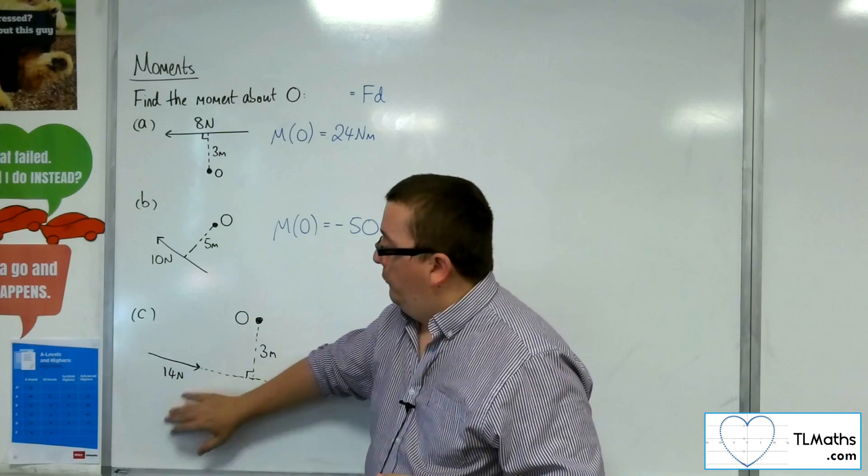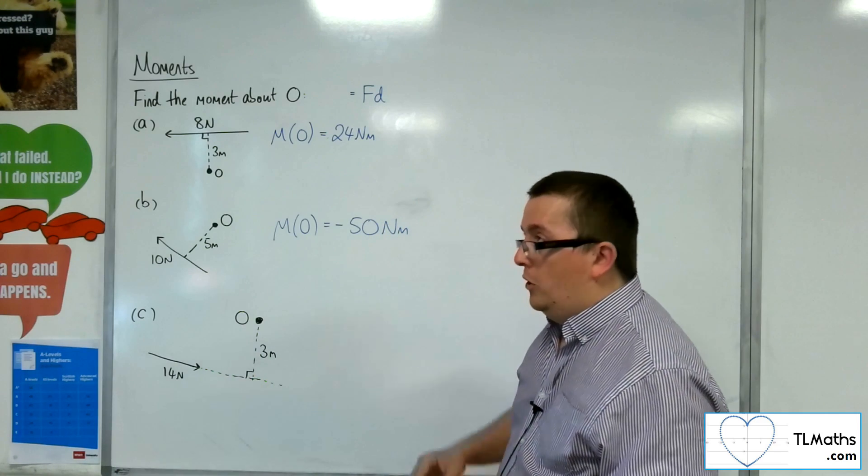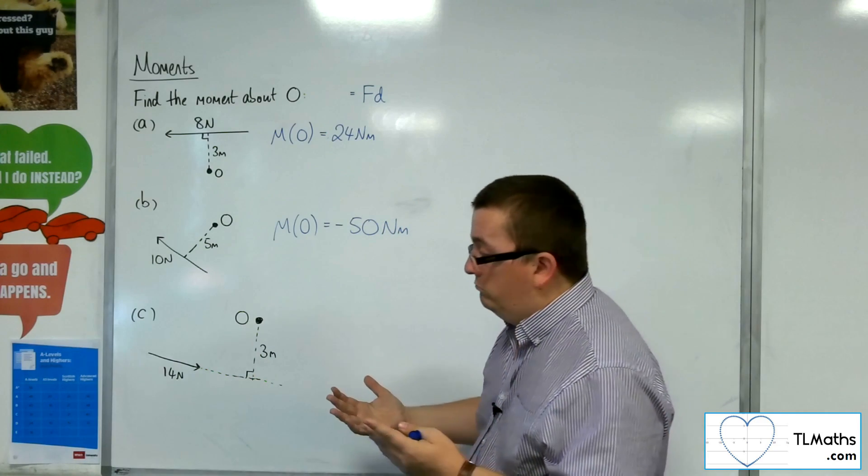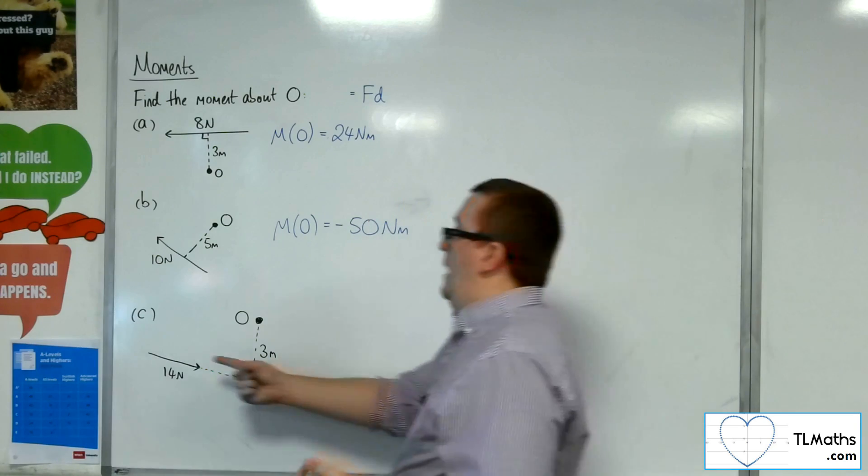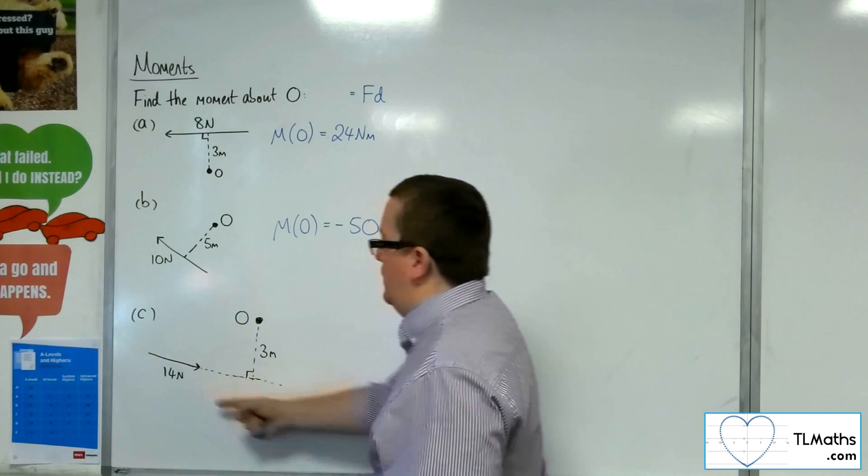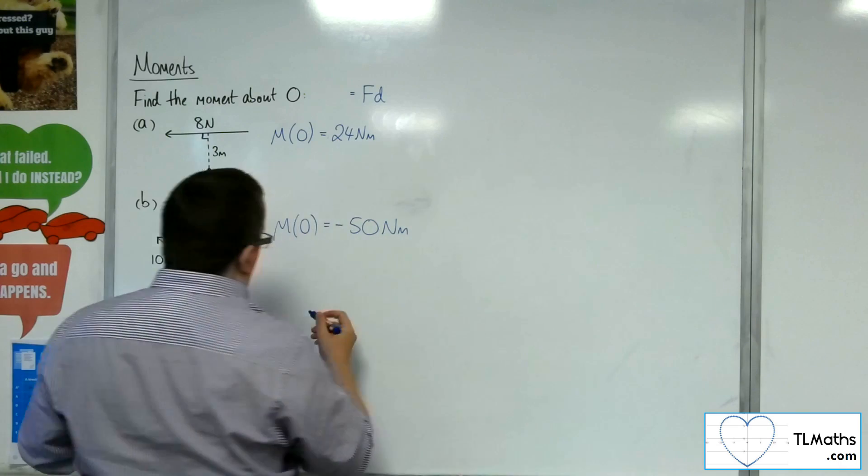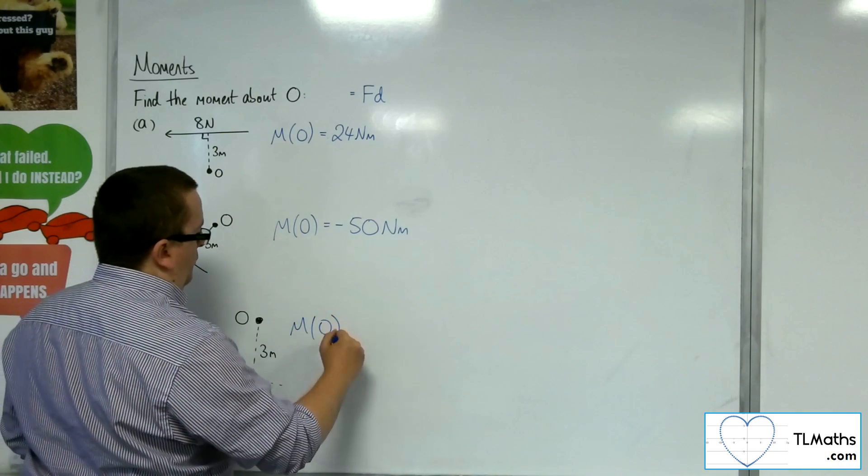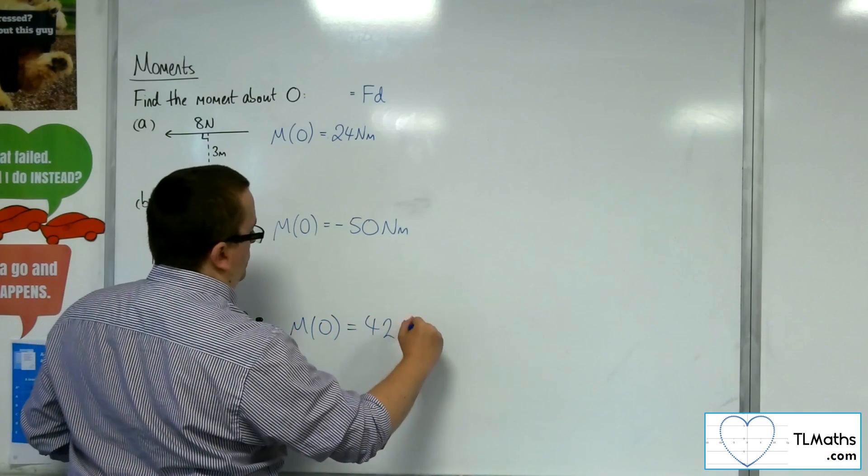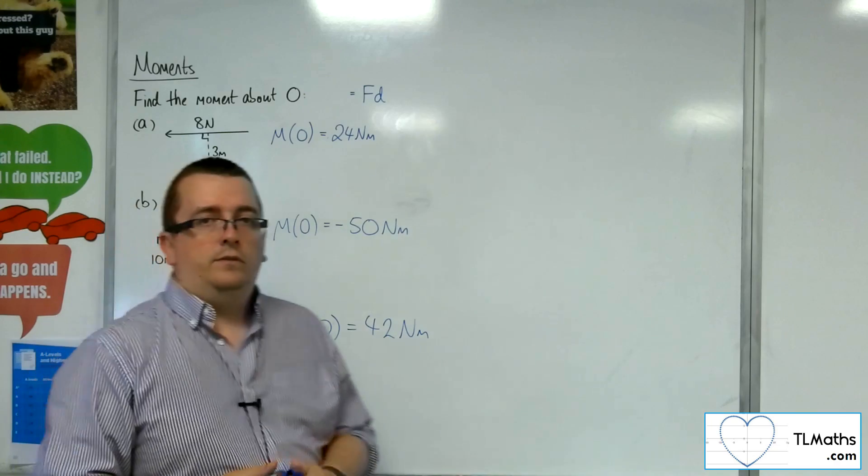We'd have 3 lots of 14, so 28, 32, 42. So 42 Newton-metres, and we'd be going round that direction, so anticlockwise, and so 42 Newton-metres.